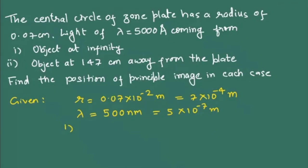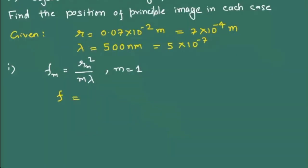In first case, the object is at infinity. So you're going to use the equation fm = rm²/(m×λ). It's the principle, so m would be 1. r is 7×10⁻⁴ squared by 1 times lambda which is 5×10⁻⁷. The answer is 0.98 or 98 centimeters.